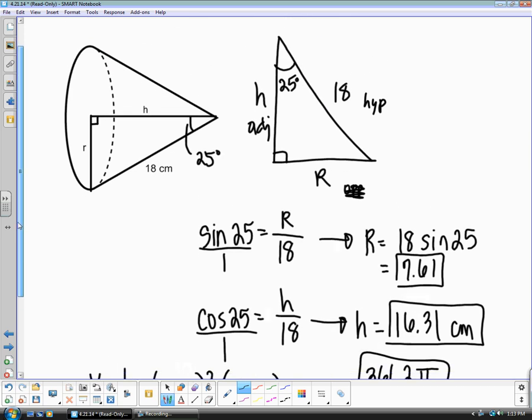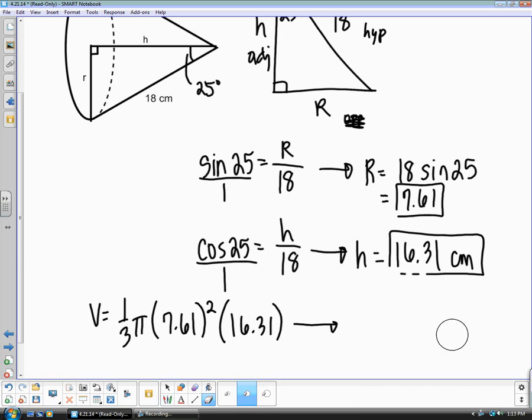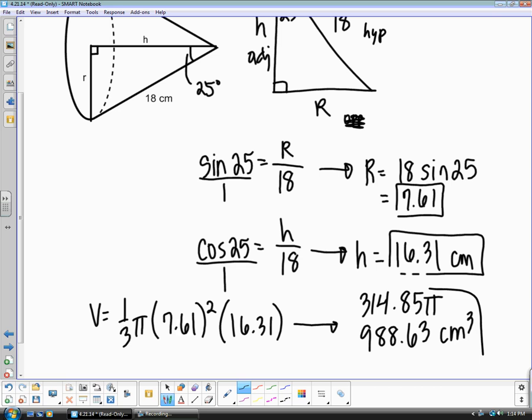Now that I just look at my notes, I have done this problem wrong. I just calculated my volume wrong. I was looking at the wrong one, I'm sorry. You are going to have a volume of 314.85 pi or 988.63. Again, I apologize.